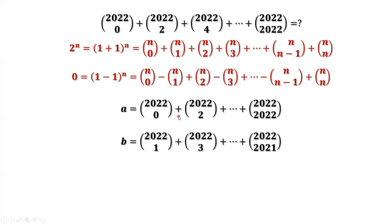In our situation, n equals 2022. The right hand side of this result is the sum of the two, a plus b equals 2 to the power n, 2 to the power 2022. In our situation, n equals 2022.